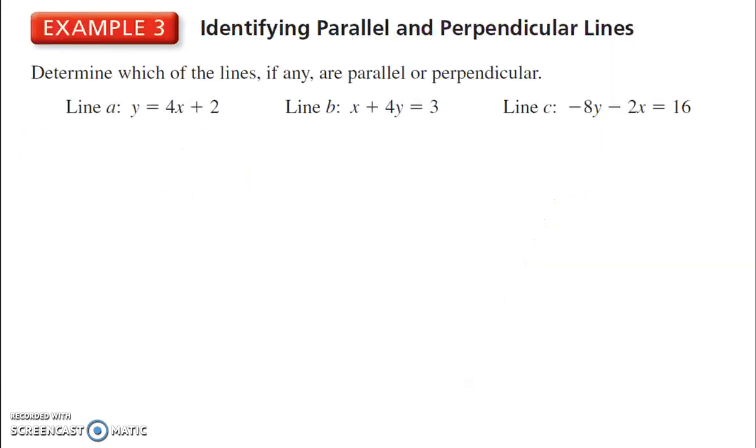Identifying parallel and perpendicular lines. Determine which of the lines, if any, are parallel or perpendicular. Here we know the slope is 4. That's always the first thing you want to do is determine the slope if we're looking at parallel or perpendicular lines. Here we don't know what the slope is. So what we're going to do is we're going to put this in slope intercept form. That means bring the x to the other side. So subtract x from each side. That cancels out. We have 4y is equal to negative x plus 3.